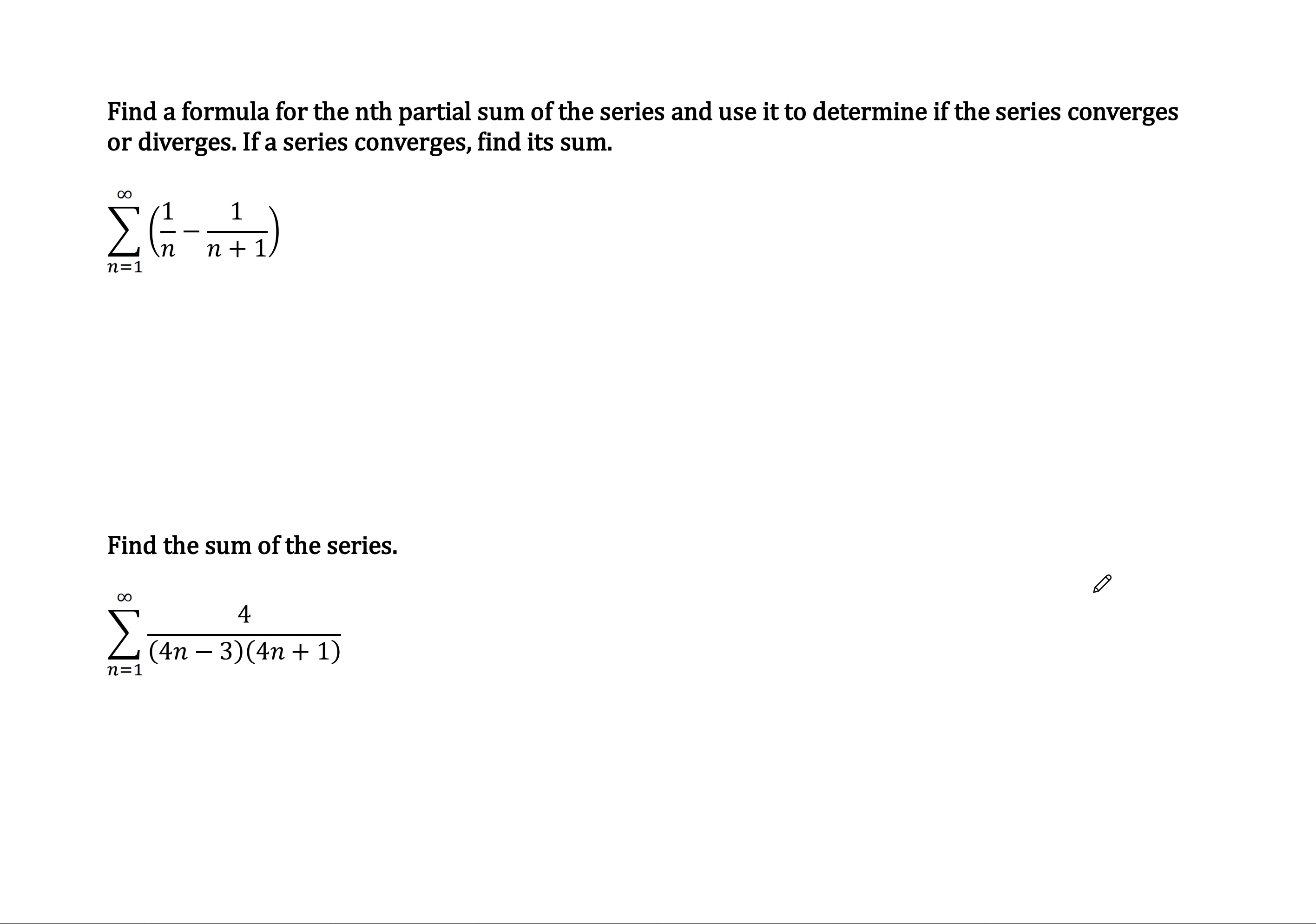In the case of the first one, we're looking at the series 1 over n minus 1 over n plus 1 from n equals 1 to infinity. Now if I were to write out the nth partial sum it would look something like this: S sub n.